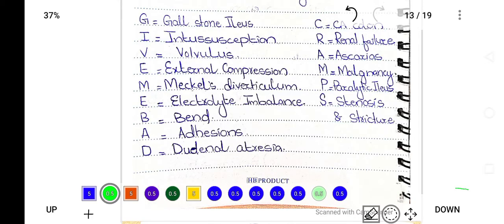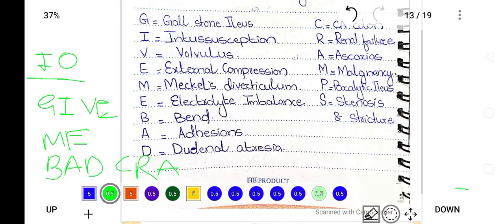The mnemonic for intestinal obstruction is 'give me bed grams.' G stands for gallstone ileus, I stands for intussusception, V stands for volvulus, E is external compression, M for Meckel's diverticulum.